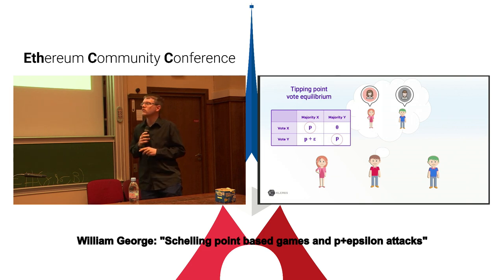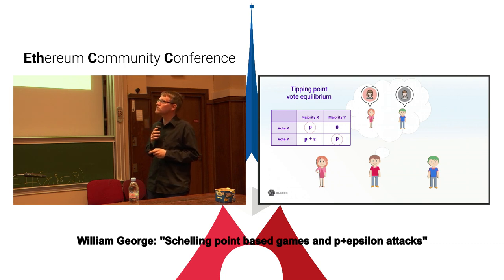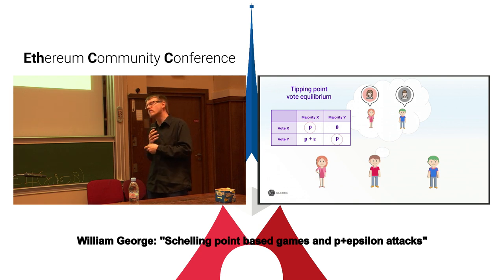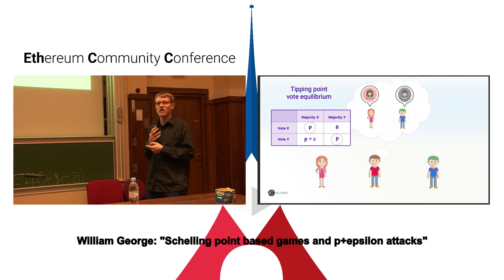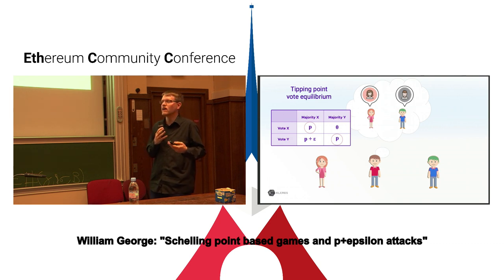There are some nuances. If you think you have the decisive vote — say one other voter goes for Alice and one for Bob, making your vote the deciding one — then either way you vote, that choice wins. You face a choice between P and P economically, so taking the bribe is no longer strictly dominant. It's not strictly better for you to take the bribe in that case.